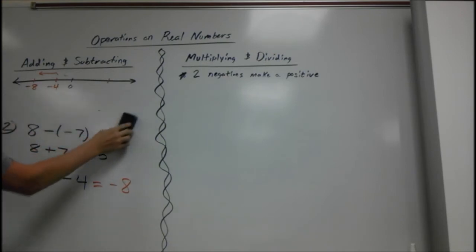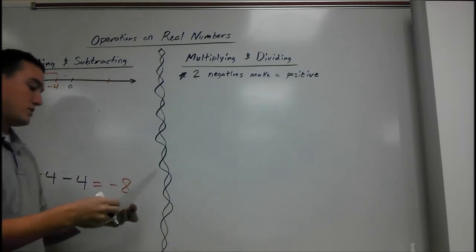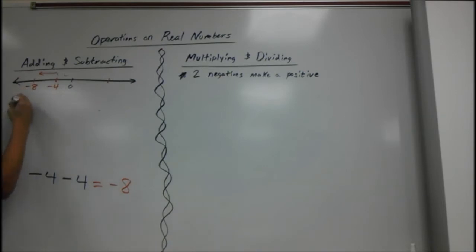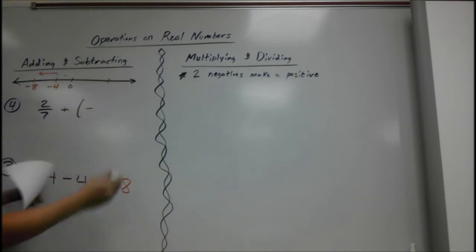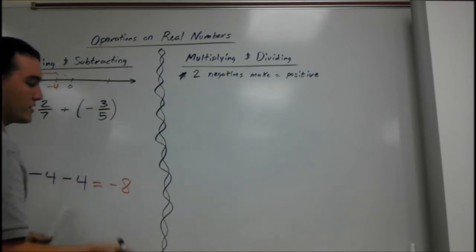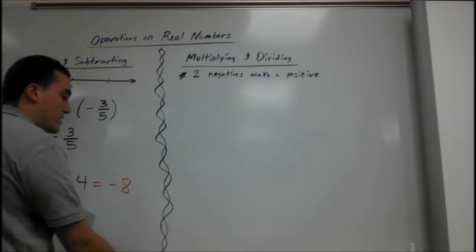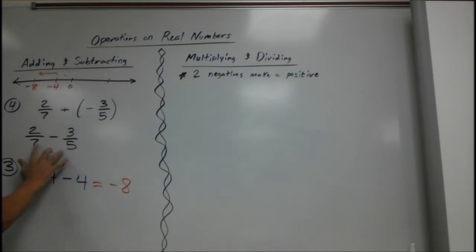One more. Let's do some fractions though. Number 4, 2 sevenths plus a negative 3 fifths. Another thing you need to know, whenever you are adding a negative, that's the same as subtracting. So really what this is is 2 sevenths minus 3 fifths. When we add and subtract fractions, we need a common denominator. 7 and 5 both go into 35. So we multiply this by 5, do it on the bottom, you've got to do it on the top. Same over here, but we're going to multiply by 7.